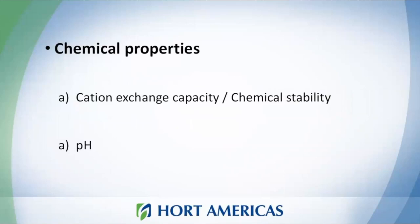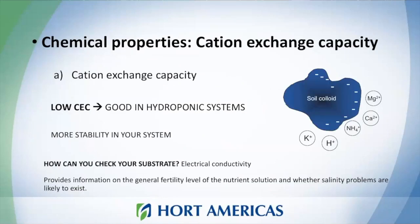Moving to chemical properties. We will speak about the cation exchange capacity, which is very related to the chemical stability of your nutrient solution, and also about pH. The cation exchange capacity is the total capacity of the substrate to hold exchangeable cations. In other words, a higher cation exchange capacity means your nutrient solution can change more, making your system a little less stable.